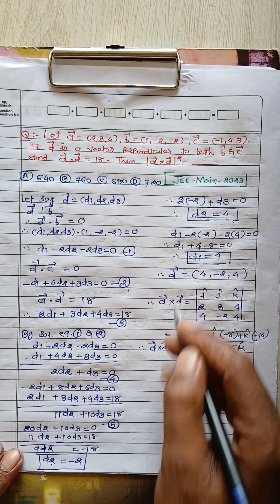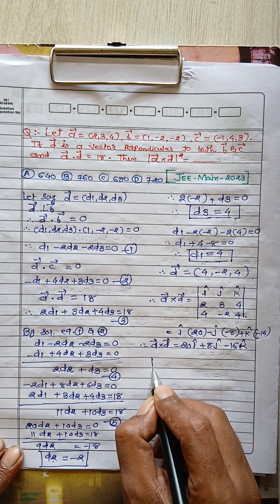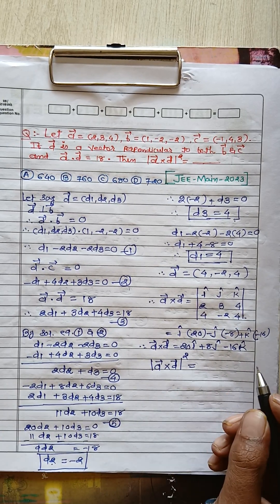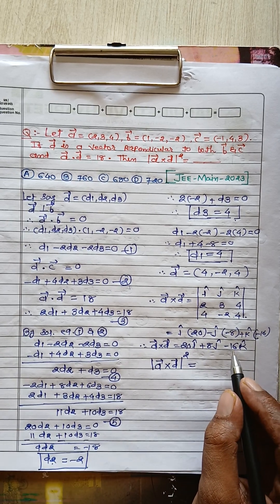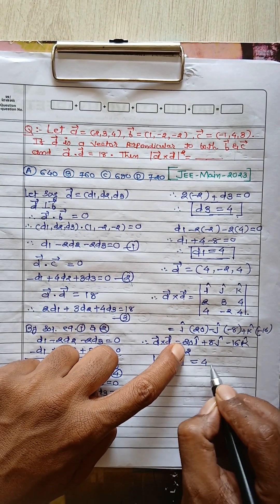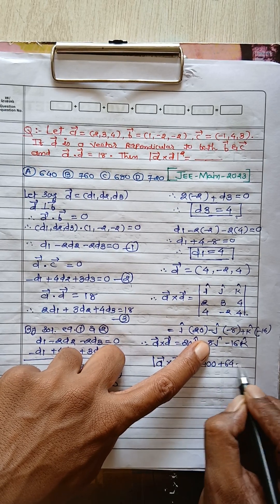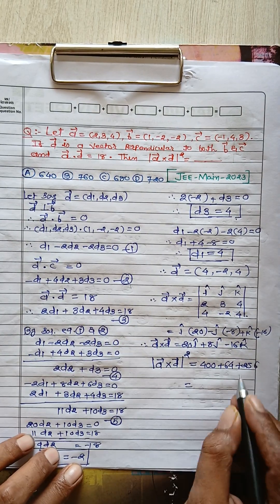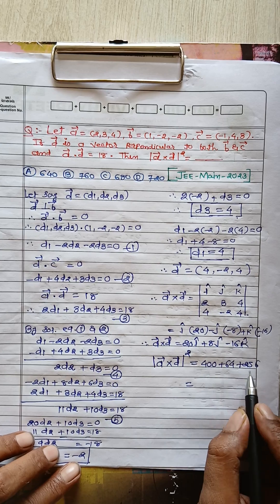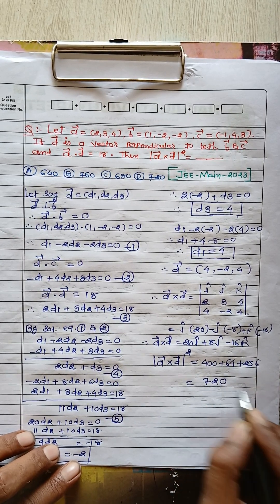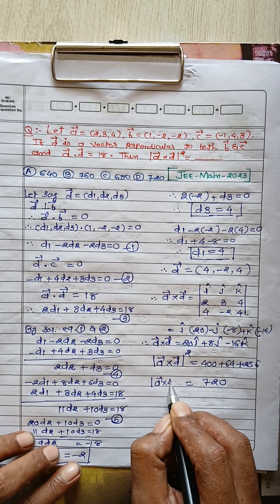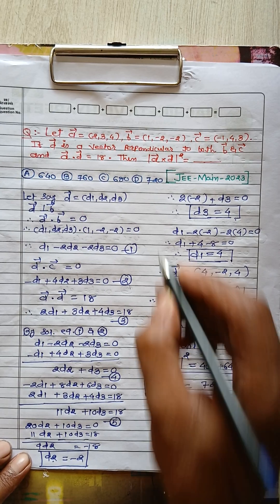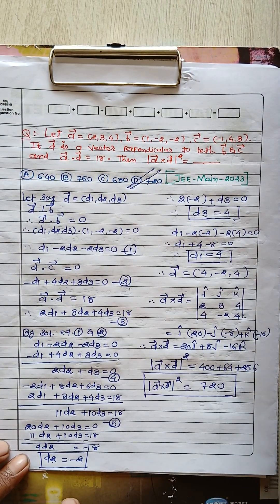The required quantity is the magnitude of vector a cross d, all squared. We square each component and sum: 20 squared is 400, 8 squared is 64, and 16 squared is 256. Adding these gives 720. Therefore, the magnitude of vector a cross d, all squared, is 720. The final answer is option D.